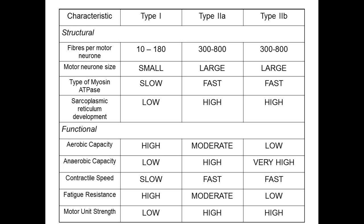When you are born, your genetics determines the proportion of muscle fibers. So if you're born with a certain proportion of type 1, type 2a, and type 2b, that's what you're born with. There is one type of conversion that is possible.